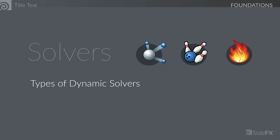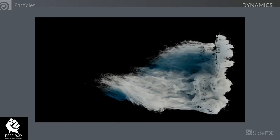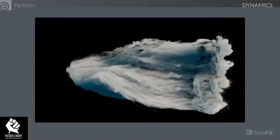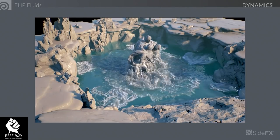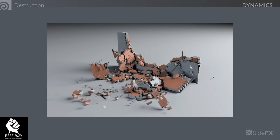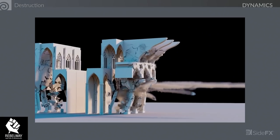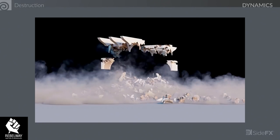Let's take a quick preview of some solvers. Here are examples from RebelWay — a company that does online training. We can see particle stuff, FLIP fluids with white water, destruction using rigid body and FEM, and destruction where particles and smoke come out right off the cracks and seams. That's where Houdini's procedural nature works — you can find those cracks and seams and spit out dust and debris from there.